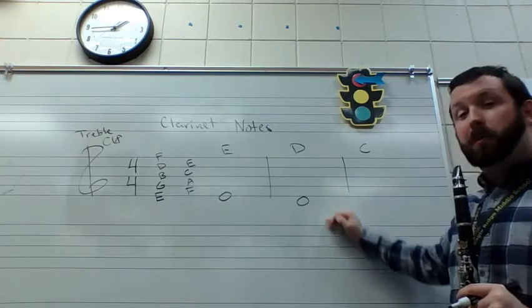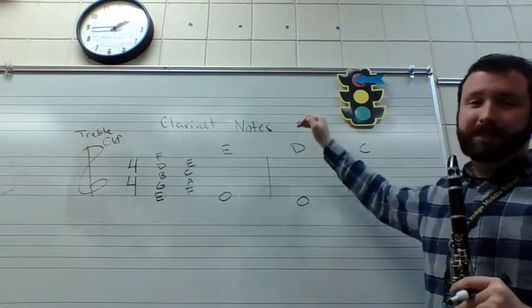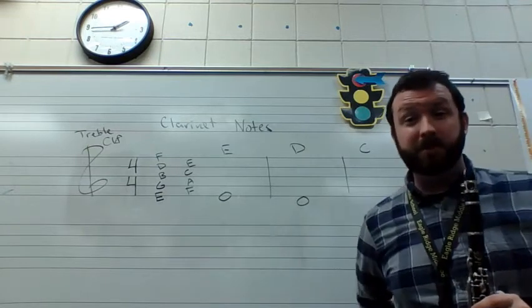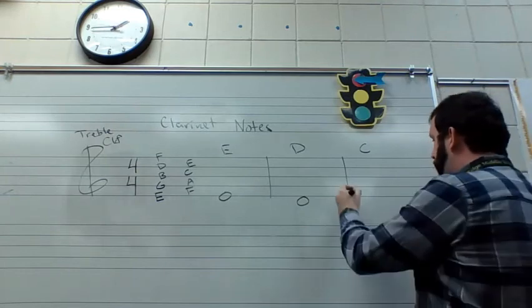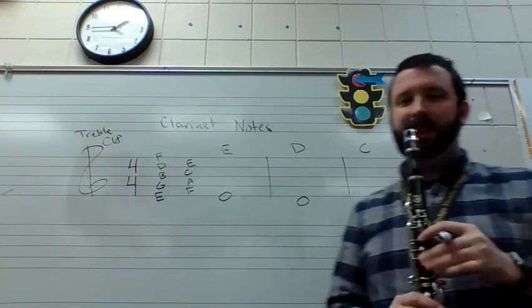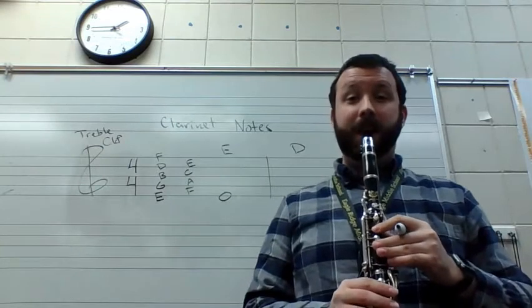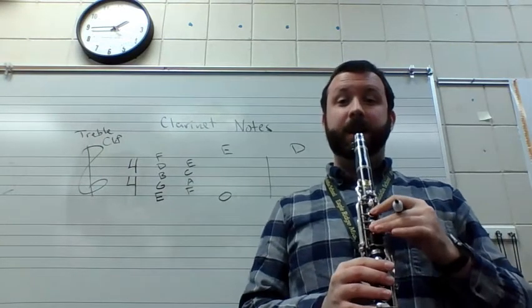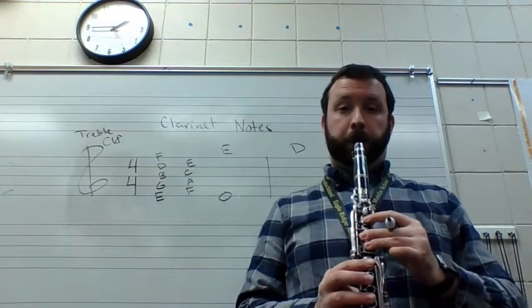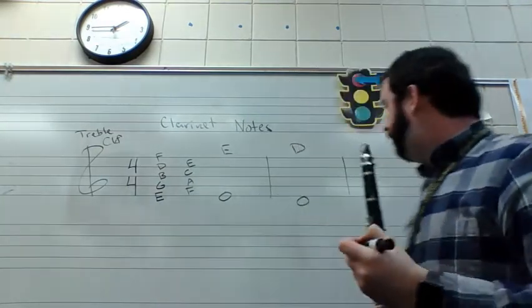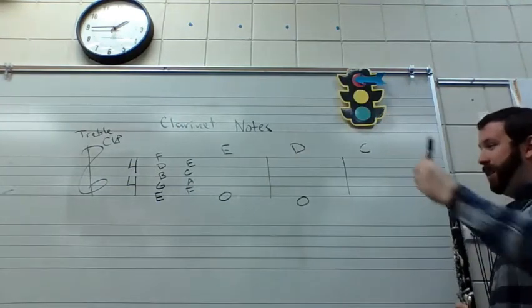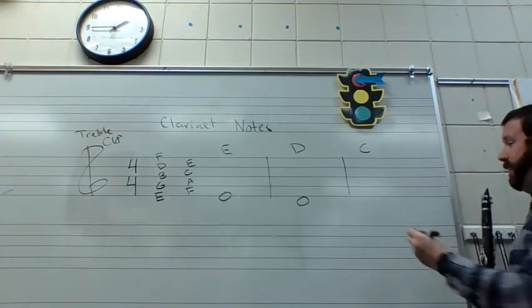We can even go below the staff or above the staff eventually, and clarinets are able to do both. Then for our final note, C, C is even lower than the first two notes. Here's E, here's D, here's C. C is even lower, so we're going to go even lower on the staff.